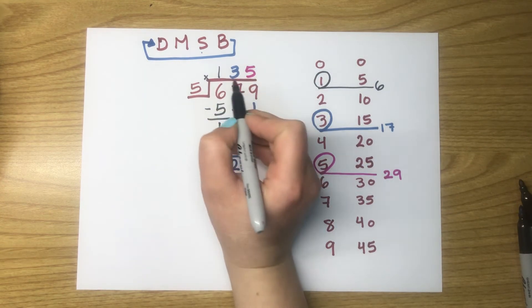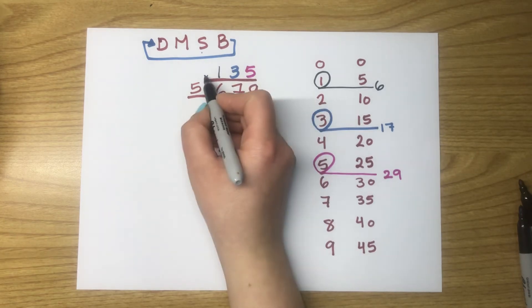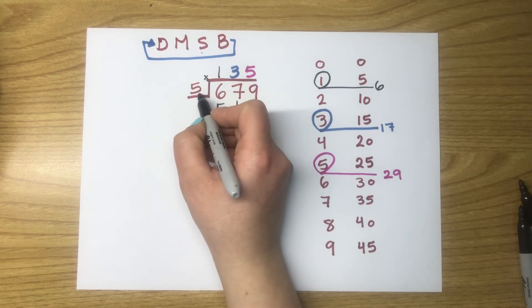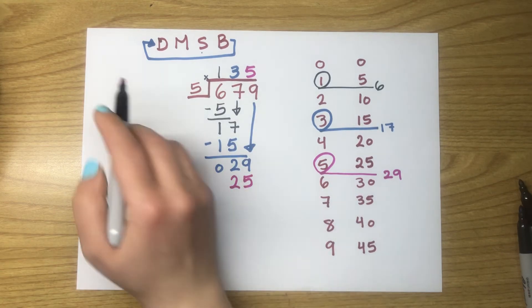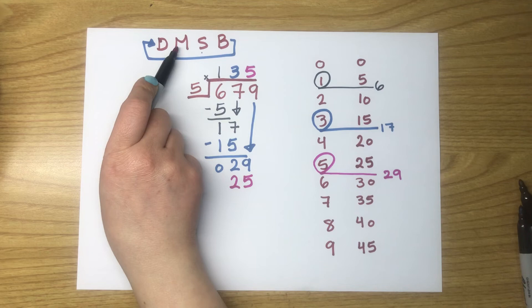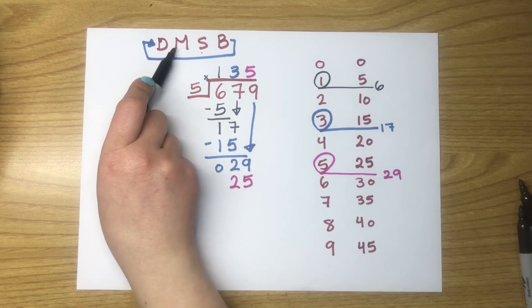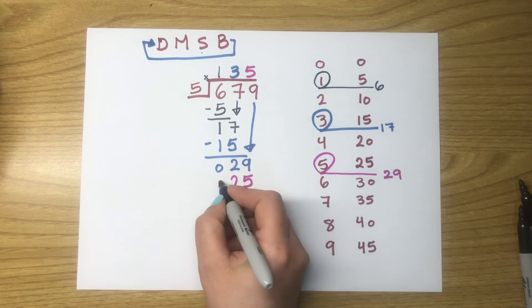1 is done. 3 is done. We have to multiply now 5 times 5. 5 times 5 equals 25. The answer underneath the 29. Done dividing. Then, multiplying the 5 with the other 5.